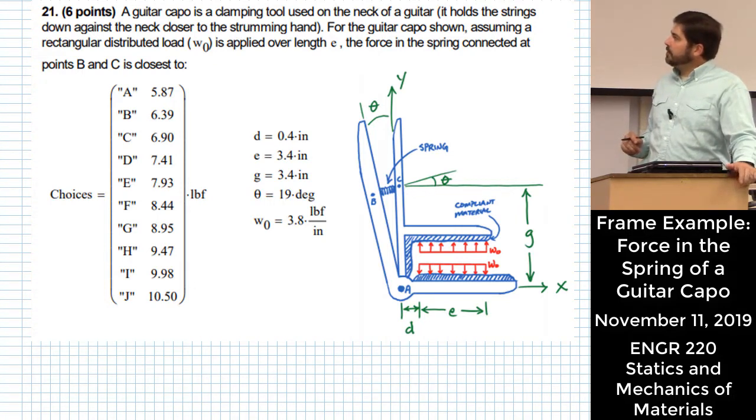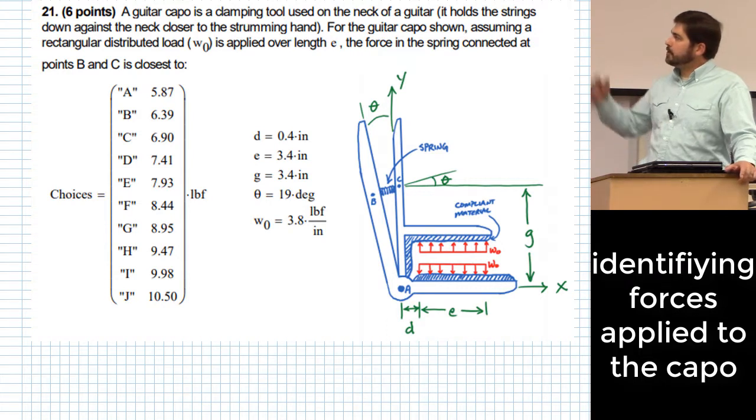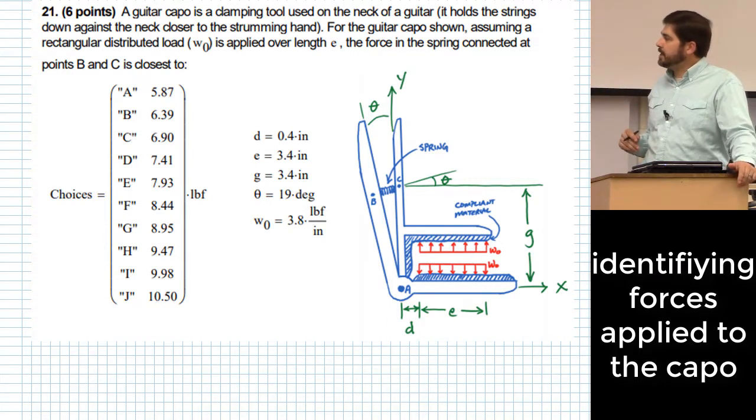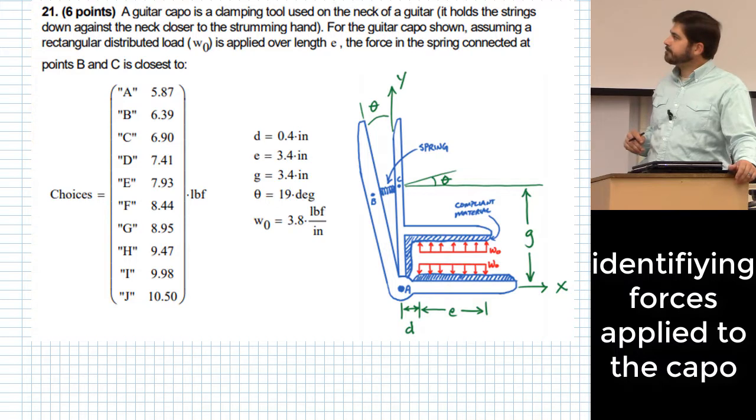For this one, we're going to assume that we have a uniform distributed load, says rectangular distributed load, same idea, applied over length E that you see on the two sides of that jaw. And then it wants to know what's the force in the spring connected at points B and C.